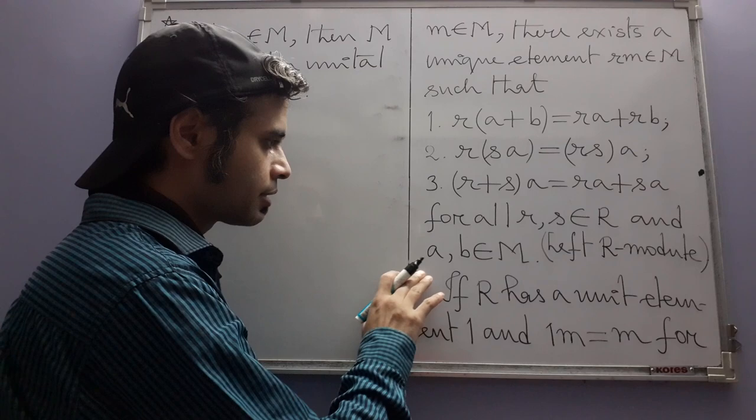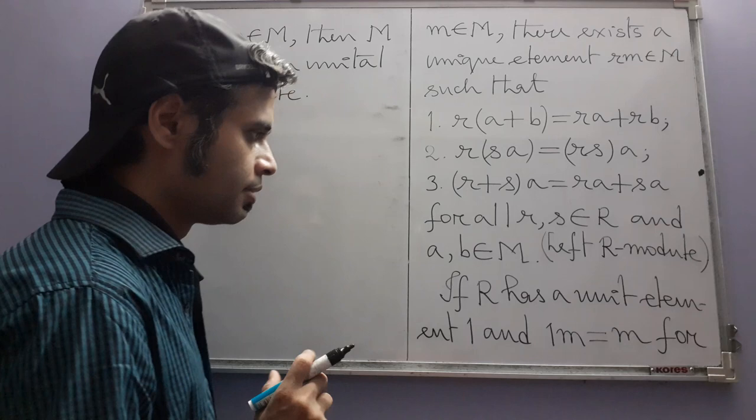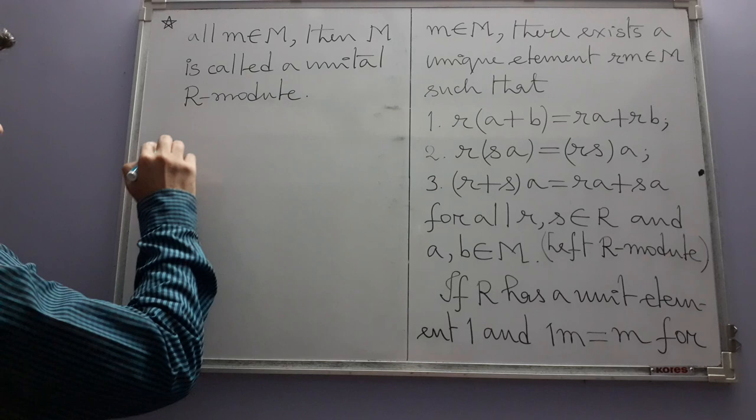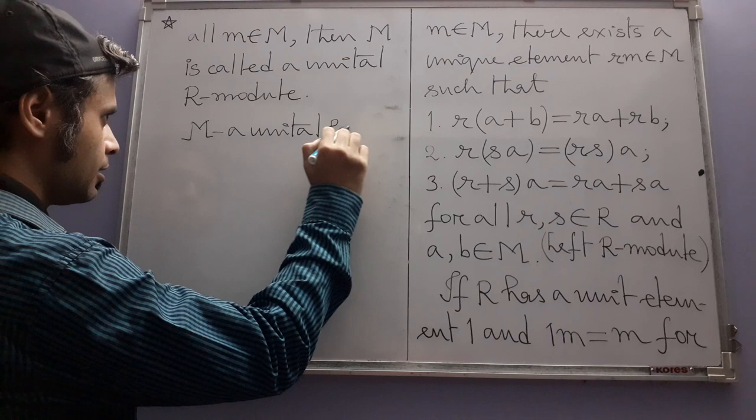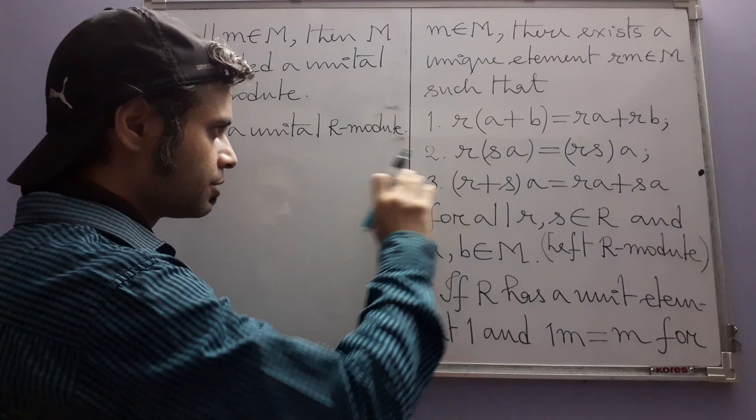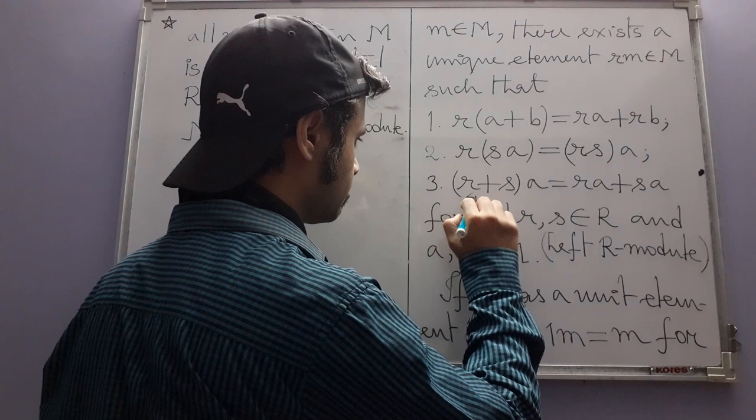We started by saying that modules generalize the notion of vector spaces. Now, suppose M is a unital R-module. That means, along with the three axioms, we now have the fourth one as well: 1·a = a. Can we then say that this is a vector space?